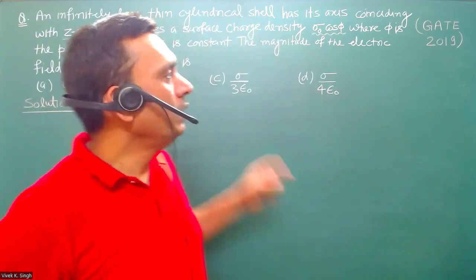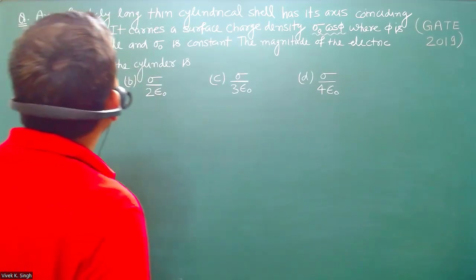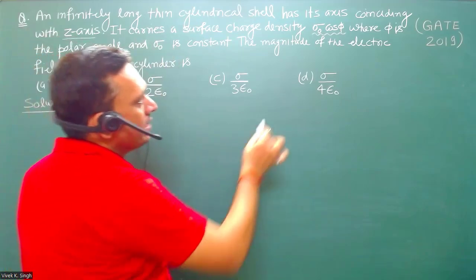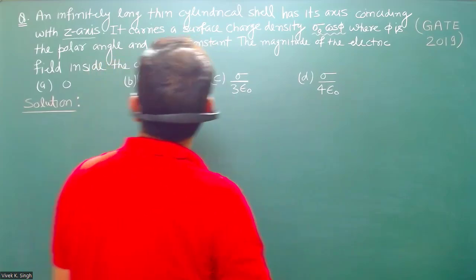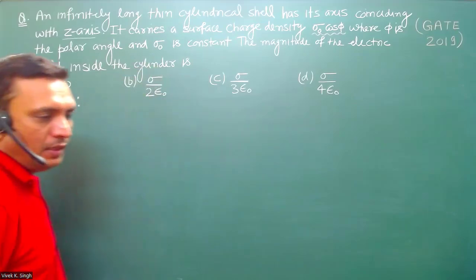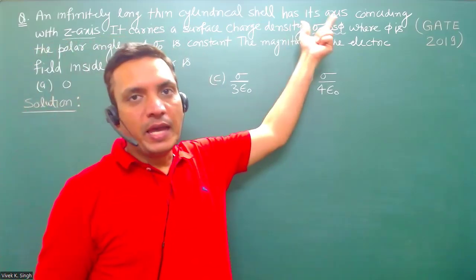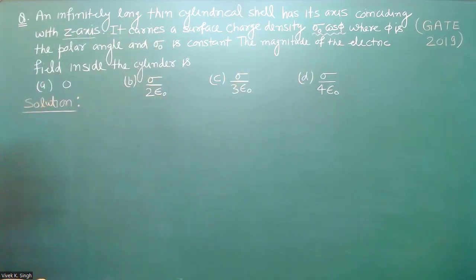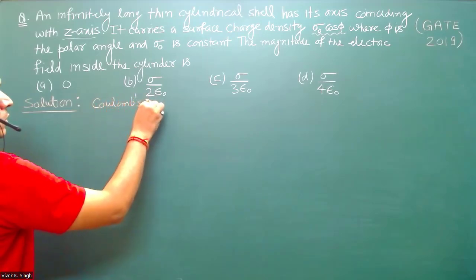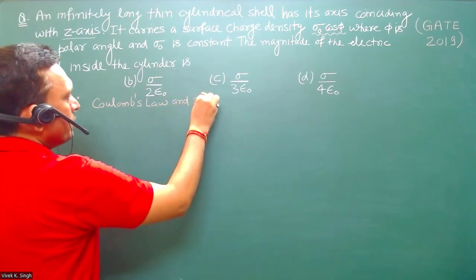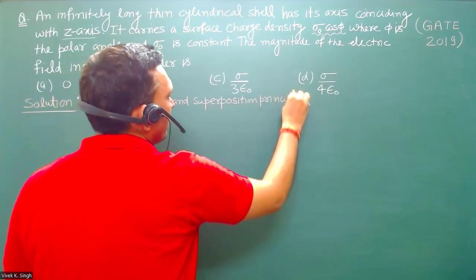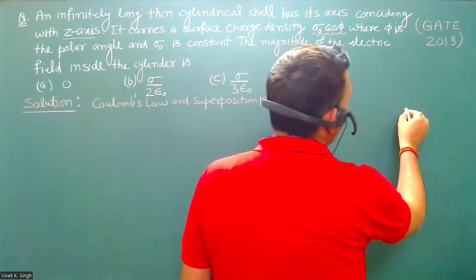An infinitely long thin cylindrical shell has its axis coinciding with the z-axis and carries a surface charge density σ₀cos(φ), where φ is the polar angle and σ₀ is a constant. We have to find the magnitude of the electric field inside the cylindrical shell. We will apply Coulomb's law and the superposition principle.